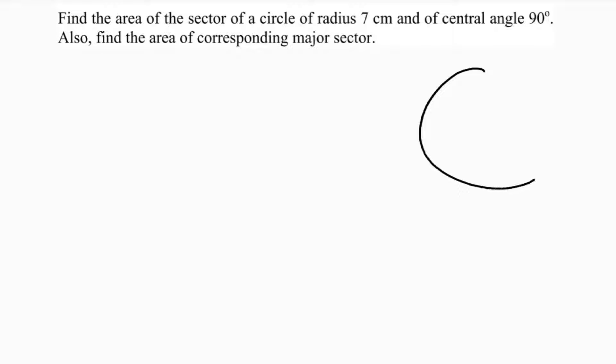So area of a sector, angle is 90 degrees. Here angle is 90 degrees, which is actually a quadrant, but we'll take it as a sector. This angle is 90, we need to find area of sector, or you can call the first part area of minor sector.